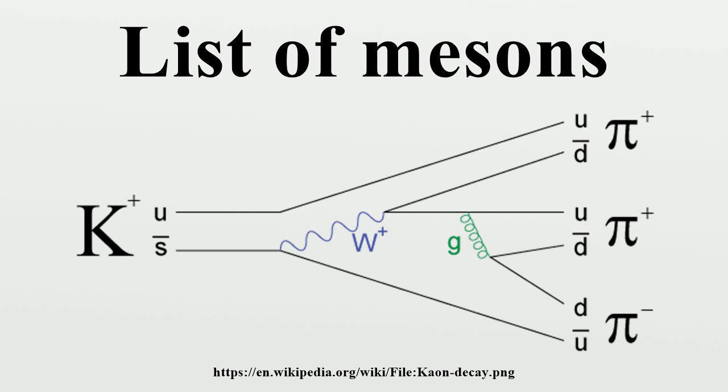For example, the charm quark was first seen in the J-Psi meson in 1974, and the bottom quark in the Upsilon meson in 1977.